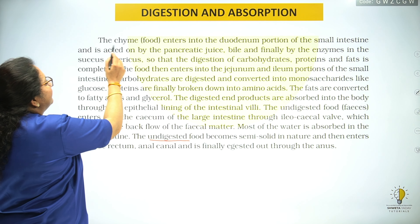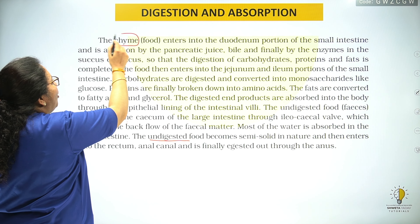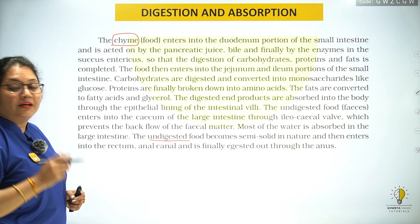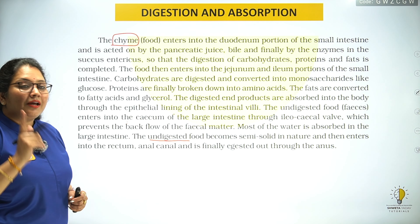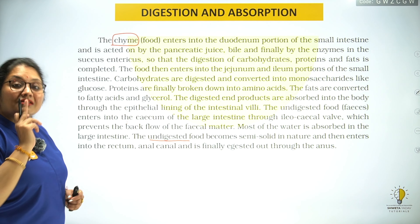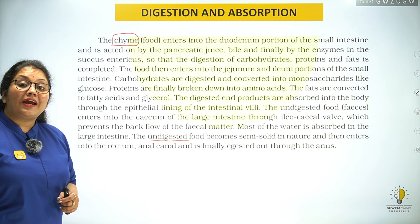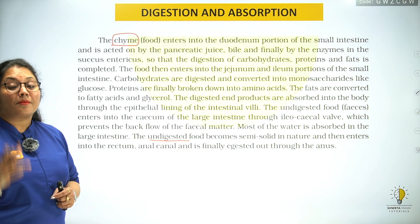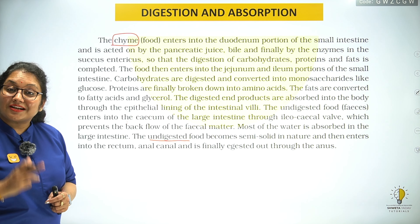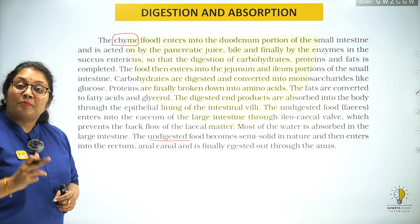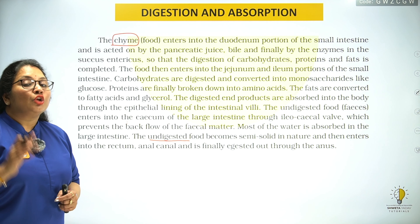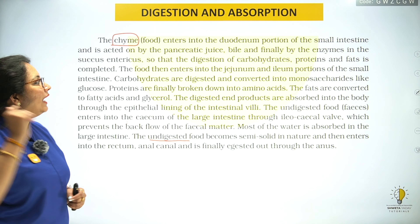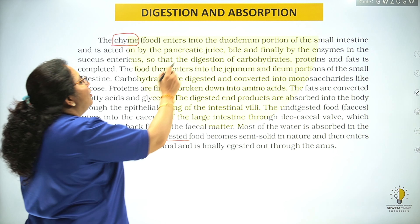The name of the food in the stomach is chyme. Chyme acidic nature ka hota hai kyunki stomach mein jo pH hai woh 1.8 hai, isliye food ka nature acidic hoga.